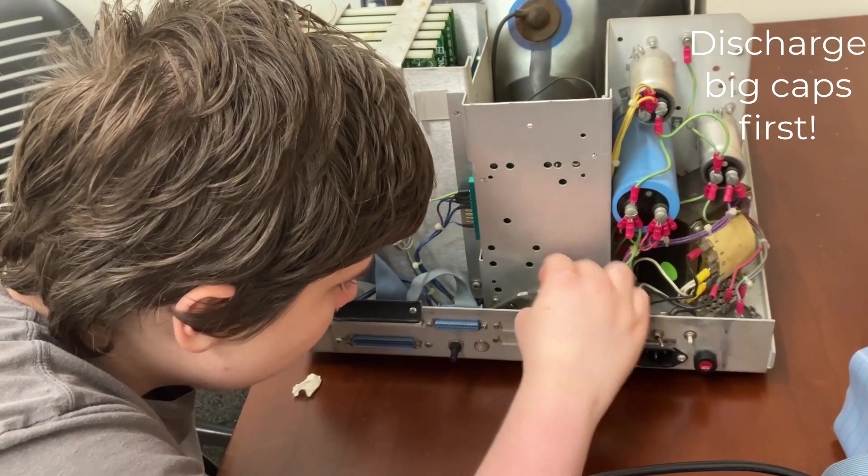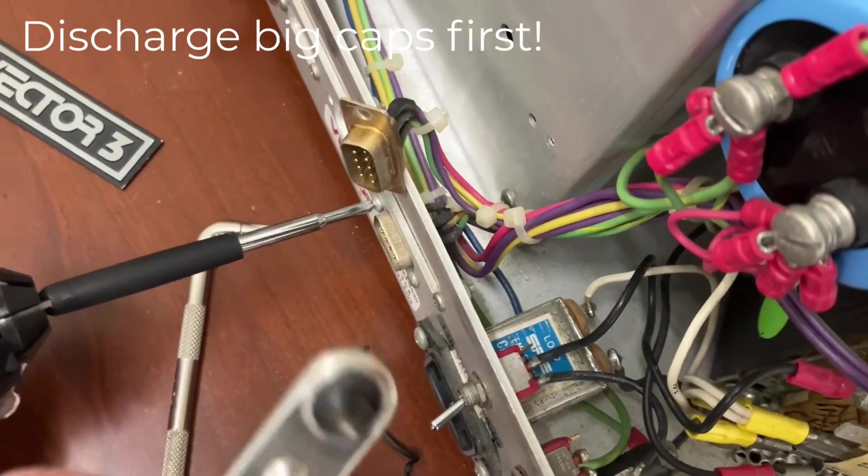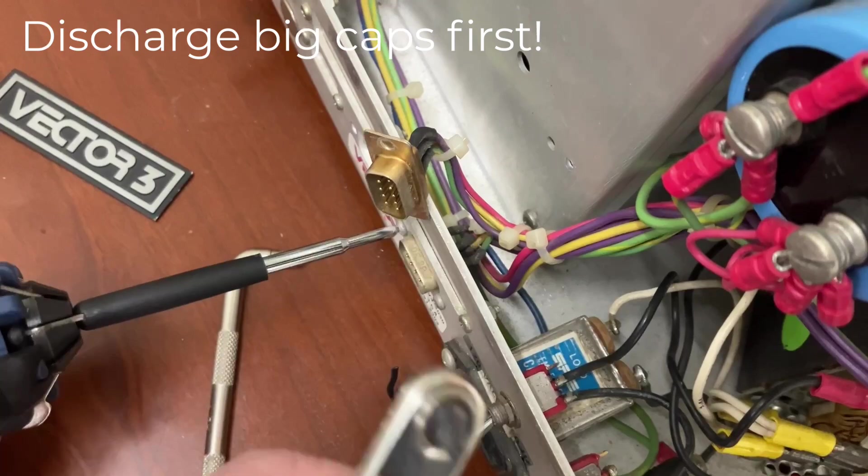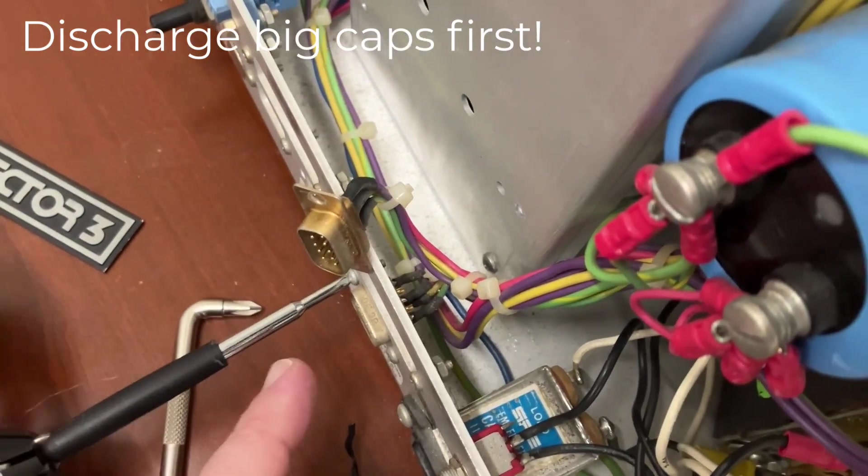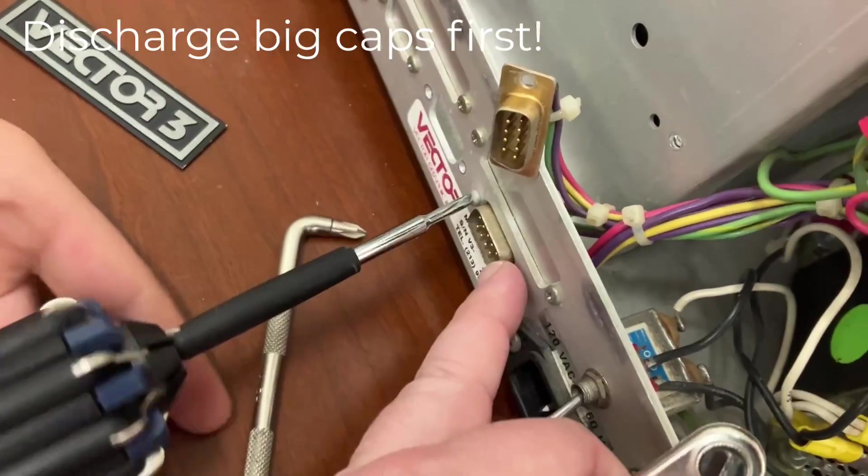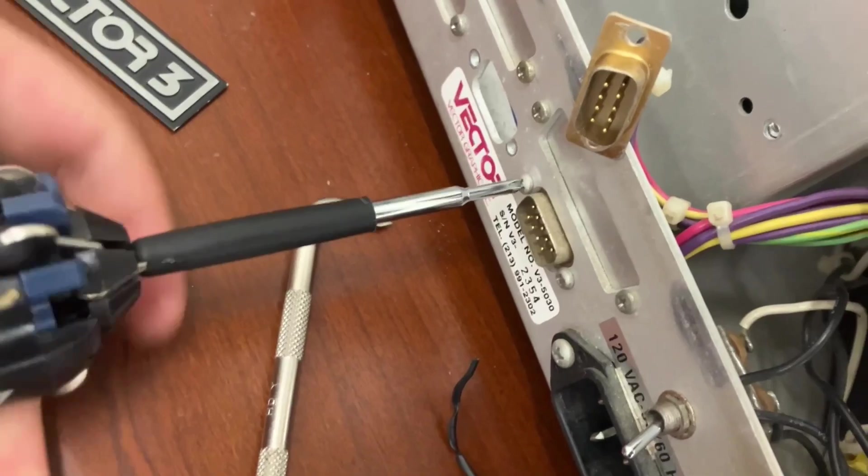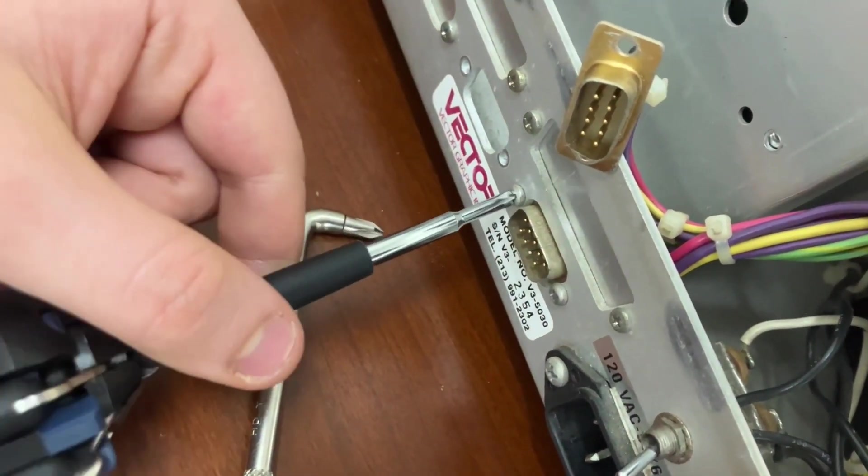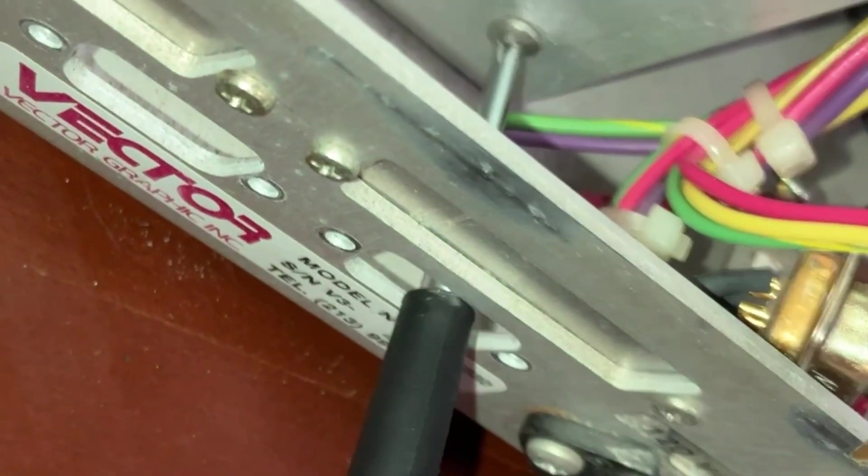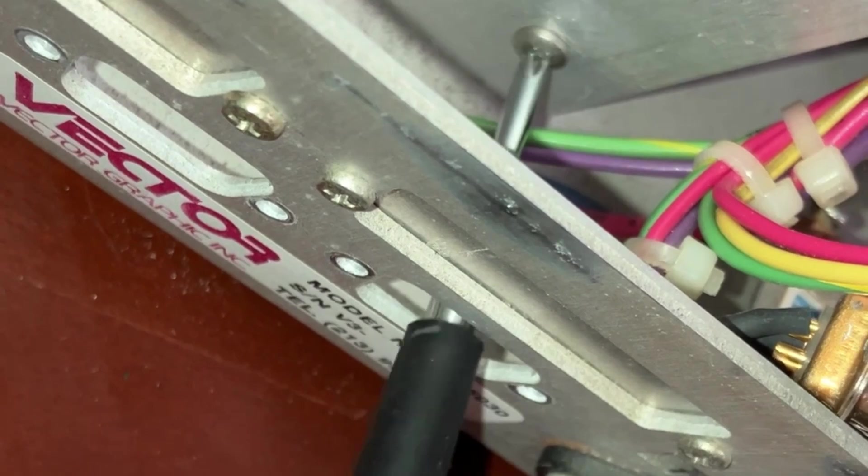We got some 90 degree screwdrivers to get these screws out. This is really annoying, but to get this thing in here we need to take these power connectors out. Turns out these are power connectors, they are not RS-232.